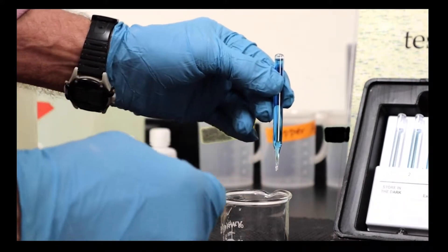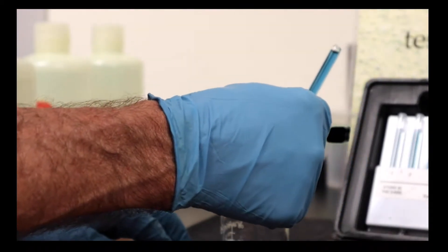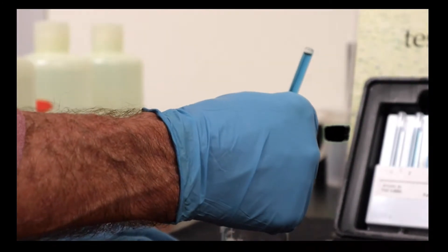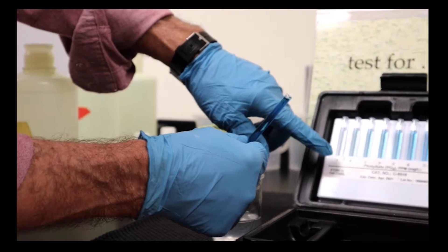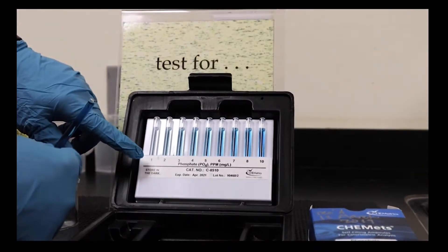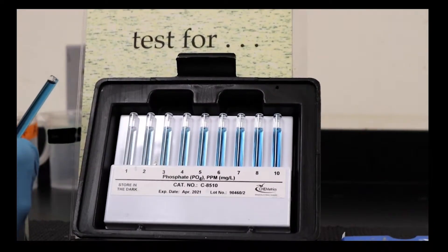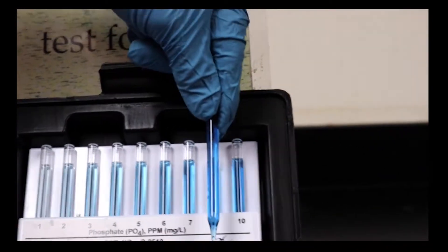What we're going to do is hold this up so we can compare it to what we have in these test tubes. Each of these is calibrated to give you the color from 1 ppm to 10 ppm phosphate, and let's see where we wind up being.